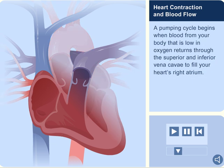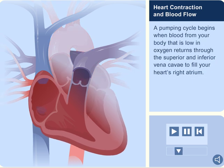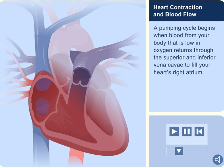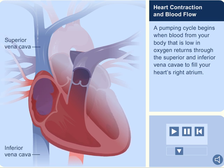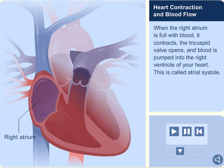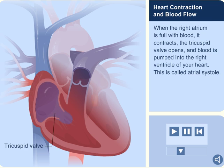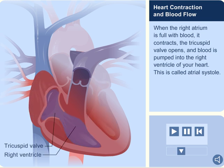A pumping cycle begins when blood from your body that is low in oxygen returns through the superior and inferior vena cava to fill your heart's right atrium. When the right atrium is full with blood, it contracts. The tricuspid valve opens and blood is pumped into the right ventricle of your heart. This is called atrial systole.